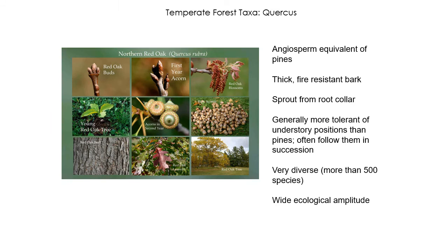Another important taxon is Quercus, or oak. I like to think of oak as the angiosperm equivalent of pines — they have a really wide ecological amplitude, occurring across a wide range of sites from pretty wet to very dry, they can resist fire, and they're very species-rich, with more than 500 species worldwide. They have fire-resistant bark and can re-sprout after fire from the root collar. They're pretty shade intolerant, but more tolerant of shade than pines. In forest succession after a big fire, pines establish first in the open sun, then oaks come in, and then more shade-tolerant trees after that.